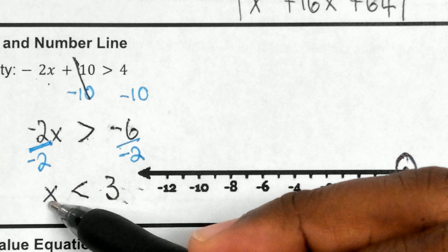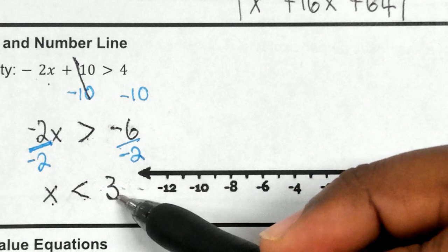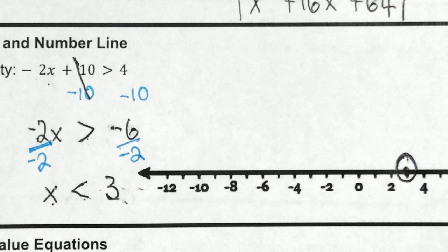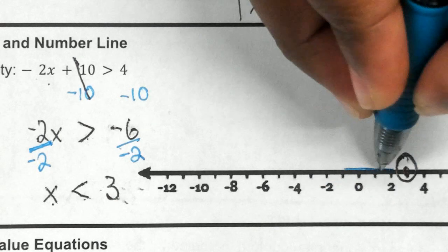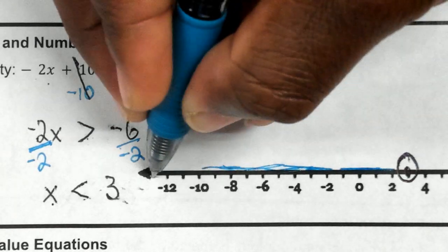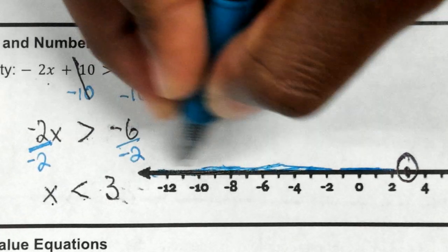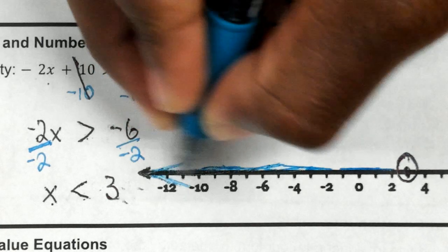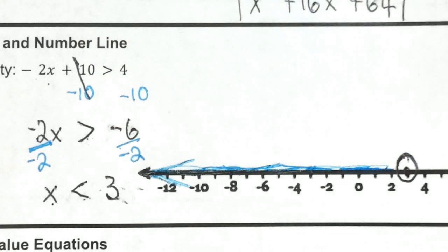All the numbers smaller than 3 are numbers like 2, 0, negative 1, numbers to the left. So just like that, you shade to the left.